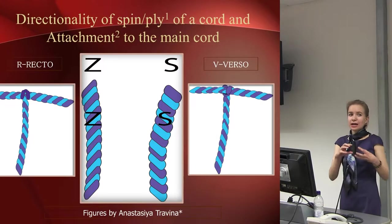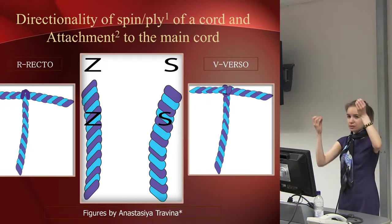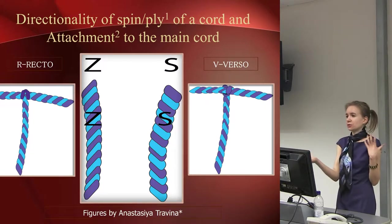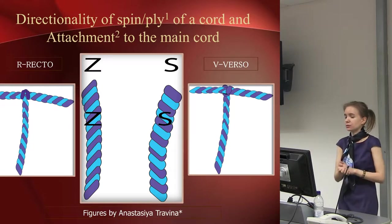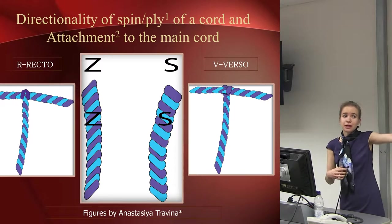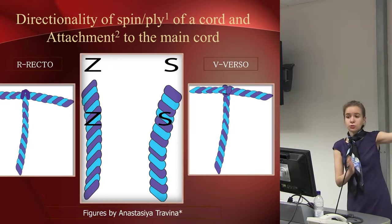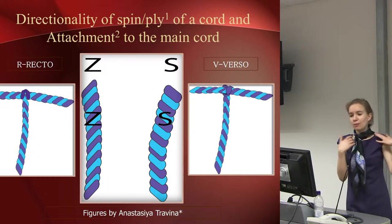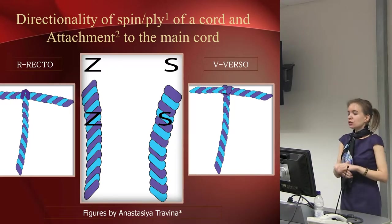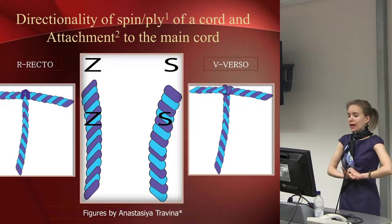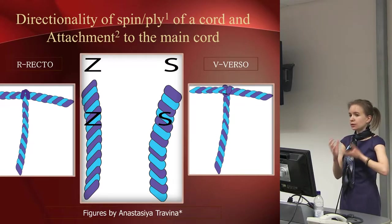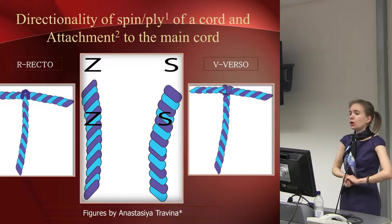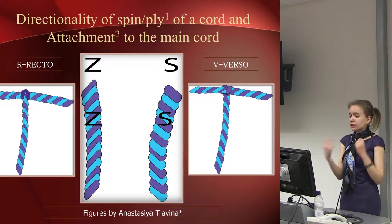There is one main cord, with smaller cords attached to it, and two different types of attachments — terms typical of textile terminology. Imagine my hand is the main cord, and the other cords are attached either in verso or recto attachment style. There is also the S/Z ply and spin of the cord — another interesting parameter to study. In this example, we will look at verso and recto attachment.